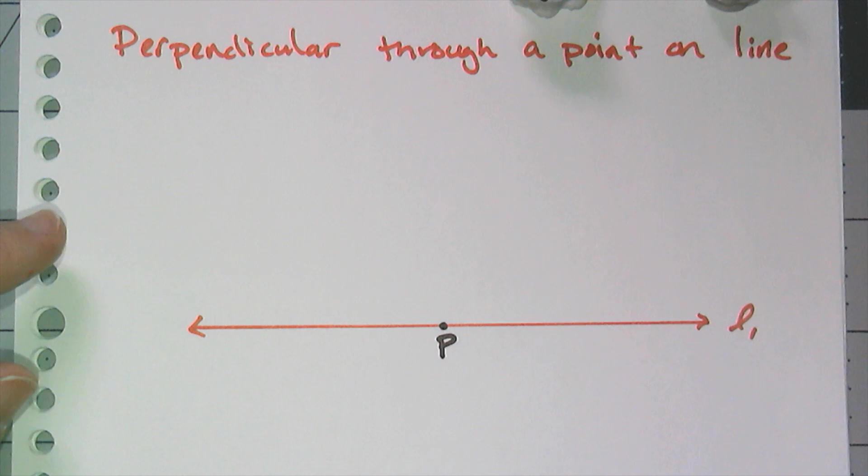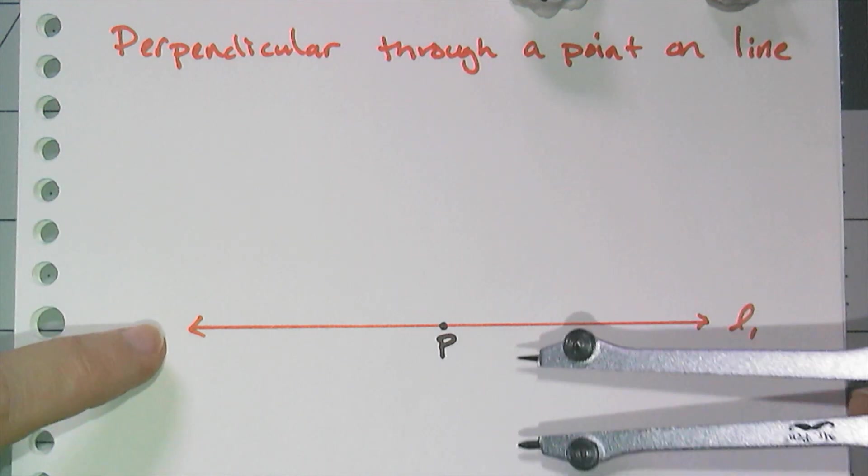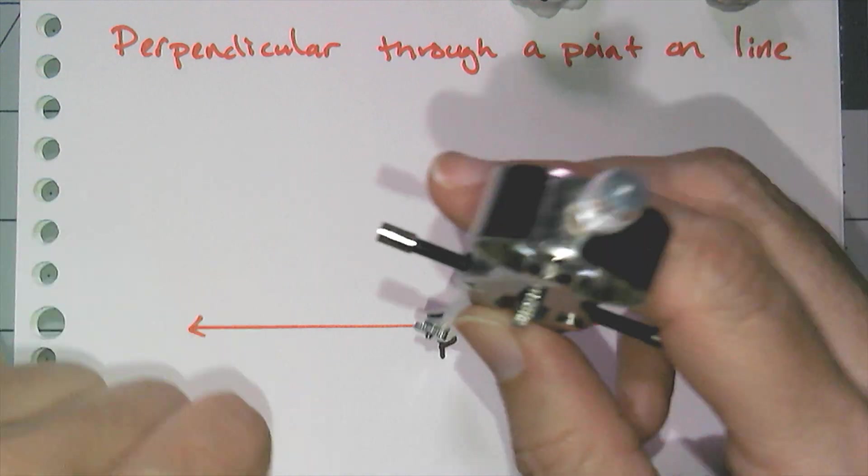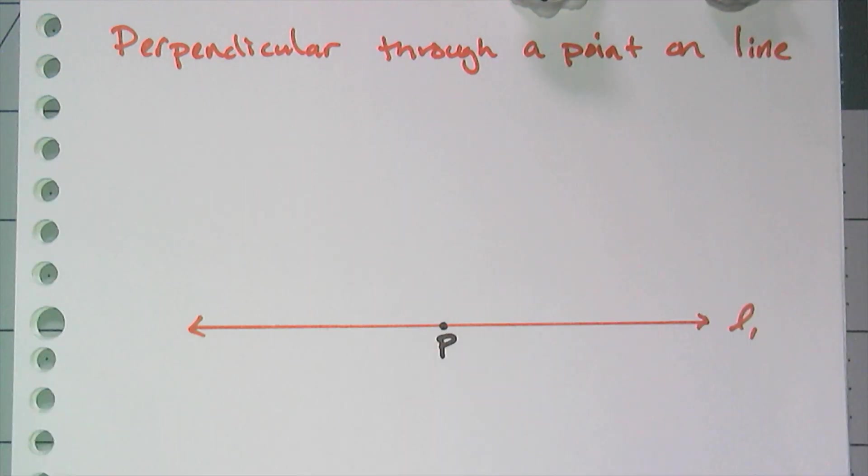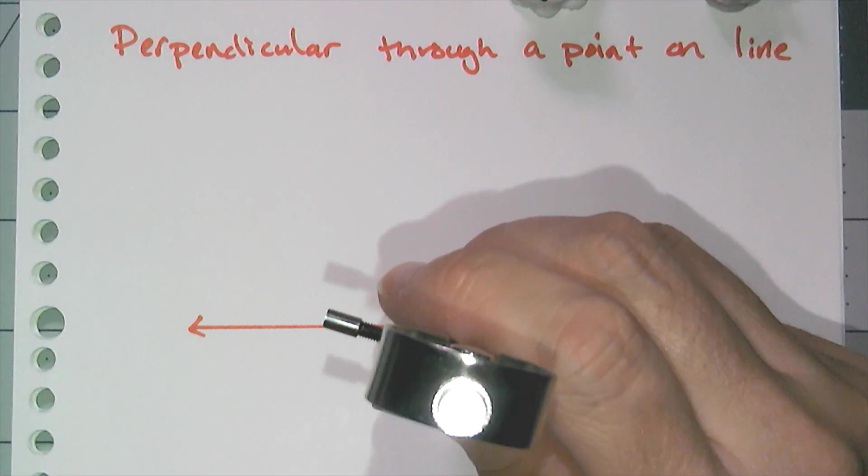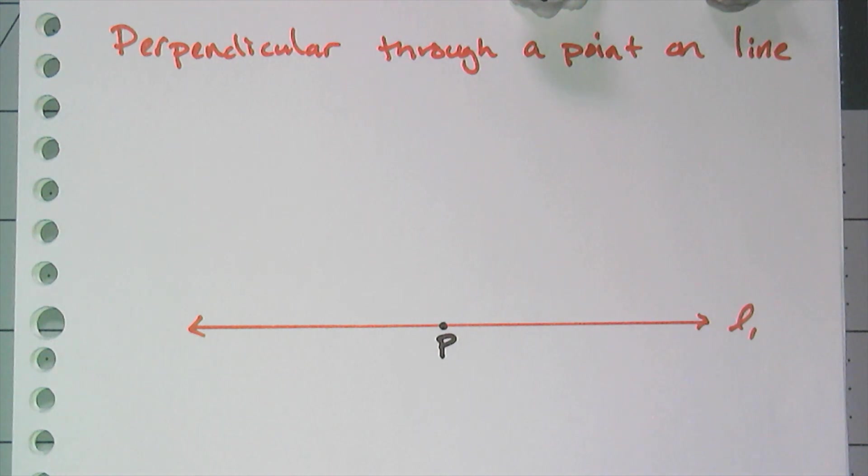Let's look at how to construct a perpendicular line that goes through a point on the line. This is an extra construction because in our class we have you try to figure this construction out in your group, but if you missed that activity, this video can show you how to do that because you're going to need it.